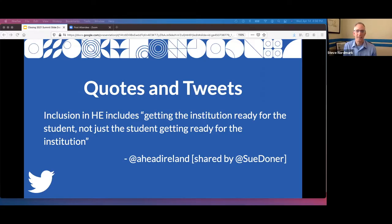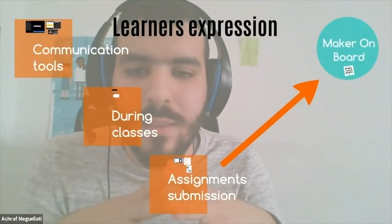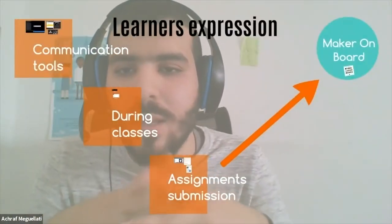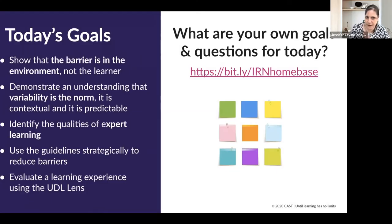Universal Design for Learning — it's not about looking for the barriers in the learner, it's about looking for the barriers in the environment, in the curriculum. That variability is the norm; it's contextual and it's predictable. How students are expressing themselves — figuring out how do we make spaces for voices. We're going to identify the qualities of an expert learner.